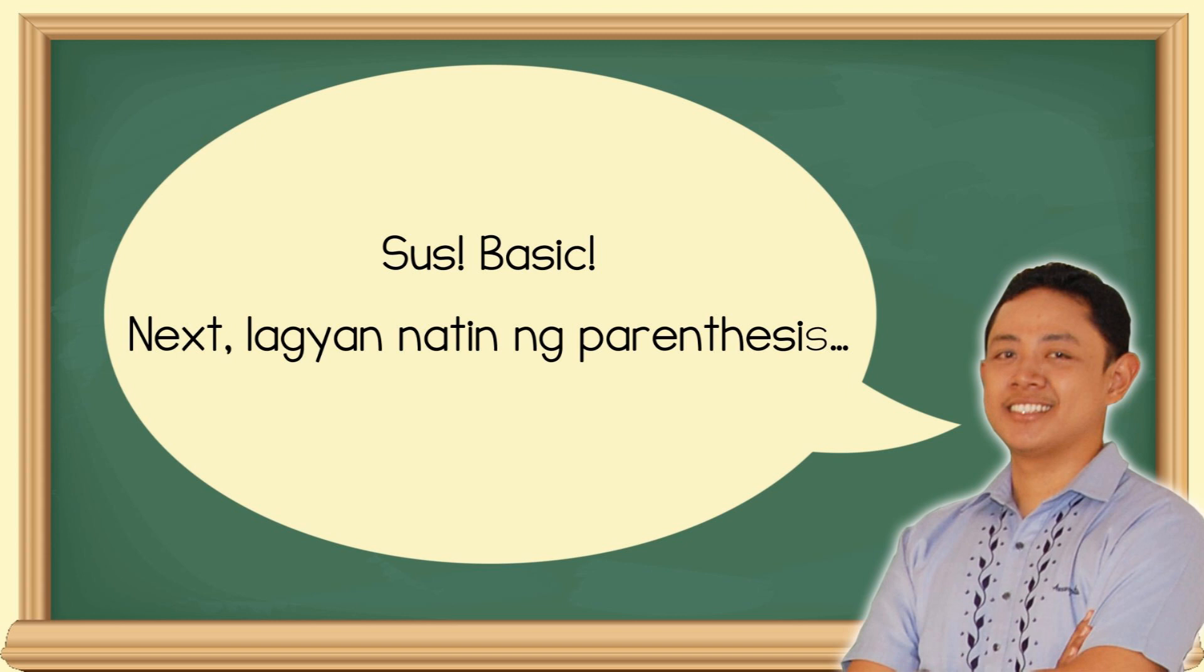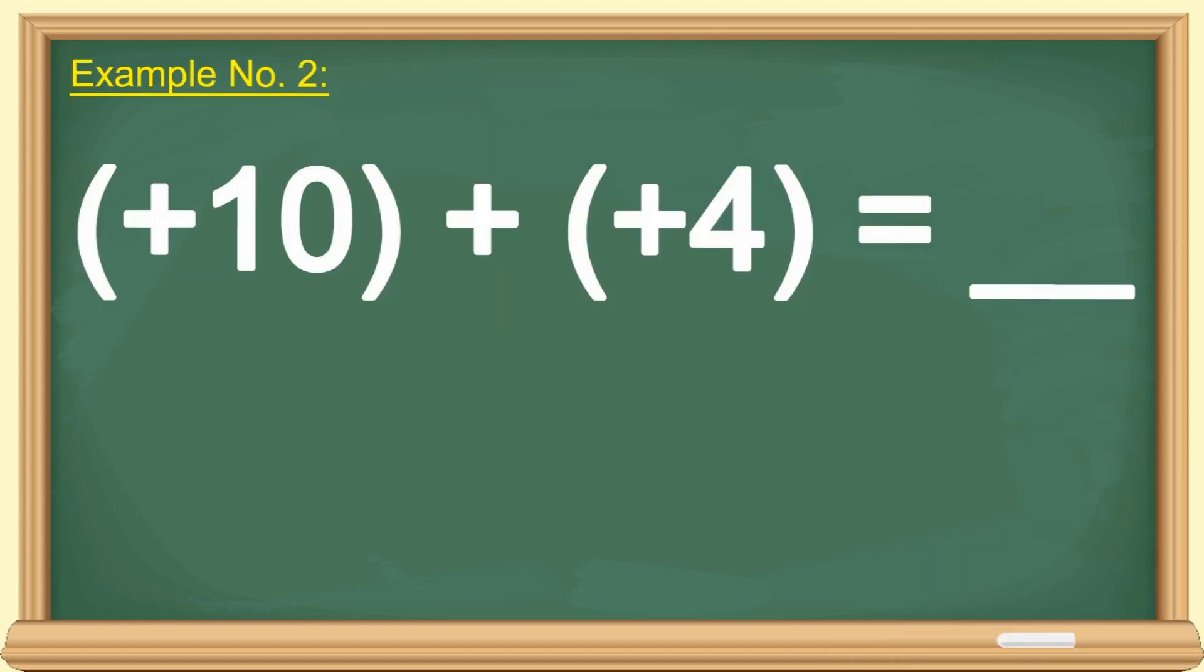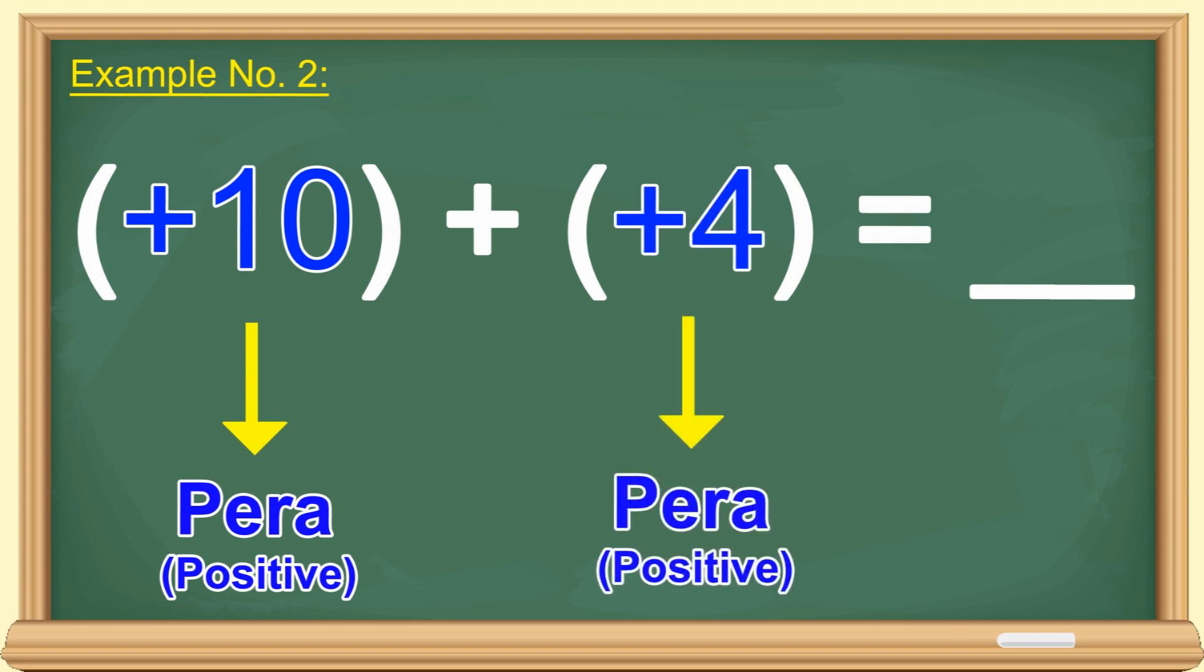Next, lagyan natin ng parenthesis. Positive 10 plus positive 4 is equal to blank. May 10 piso ka. Dagdagan mo pa ng 4 na piso. Ilan na pera mo? 14 pesos. Napadali.